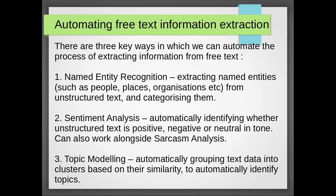In terms of automating free text information extraction, there are three main areas. The first is named entity recognition, where we try to extract named entities — things like people, places, organisations, countries — from free text and categorise them. We'll come on to why that might be really useful in a moment.